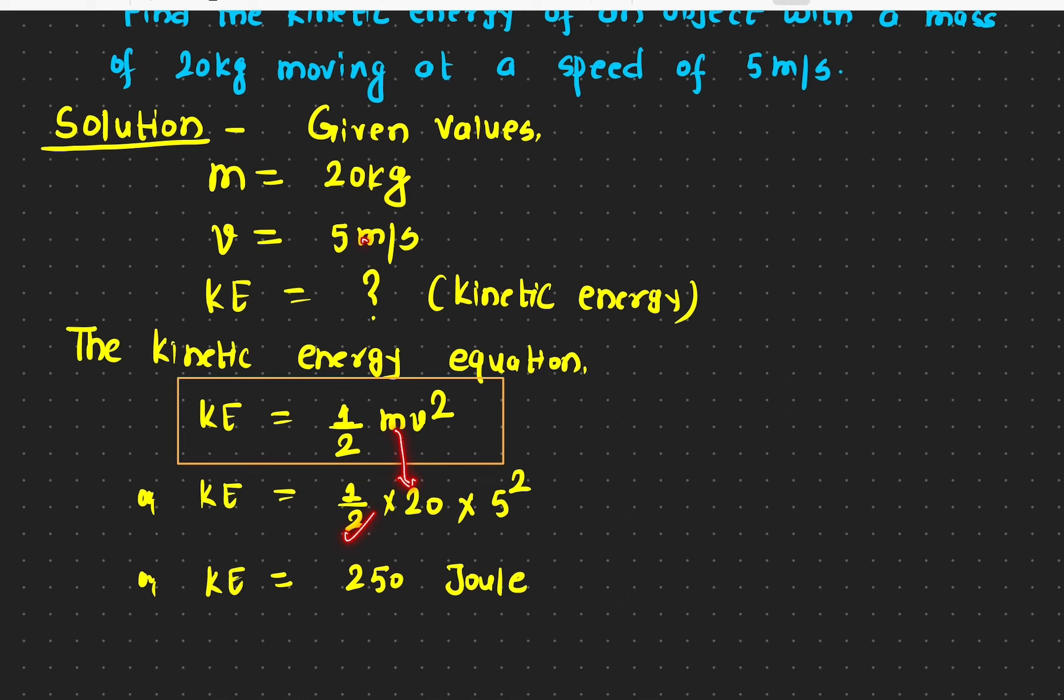All we need to do is plug in: half, mass is 20, speed is 5 meters per second. So if you do that, the number will be 250, and the unit of kinetic energy is joule.